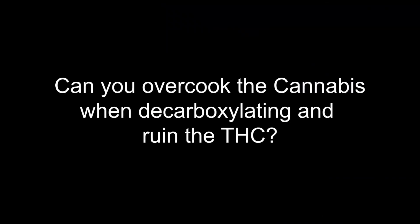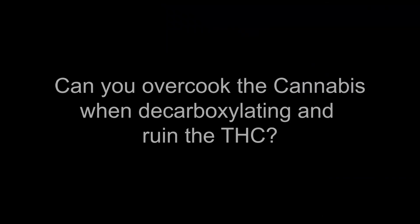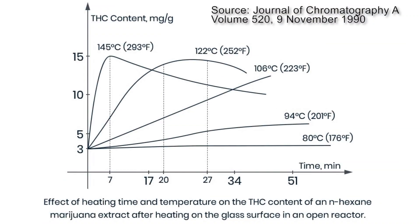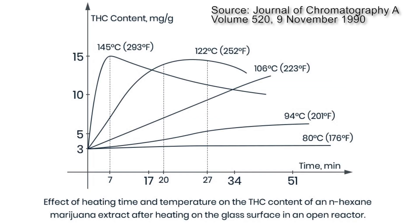Can you overcook the cannabis when decarboxylating and ruin the THC? There's a lot of misinformation floating around the internet about decarboxylization. Some of it roots from one poorly done study that made this graph. The study led many to believe that a lower temperature was needed and any temperature above 250 degrees Fahrenheit would rapidly destroy the THC content in the cannabis.